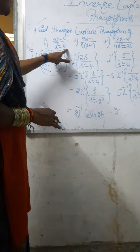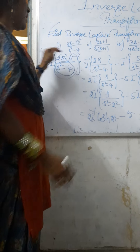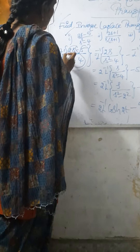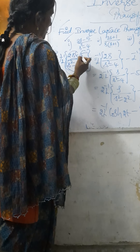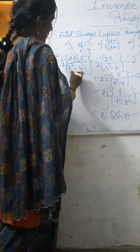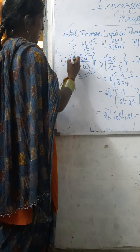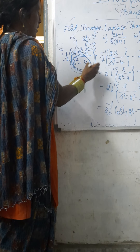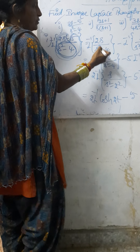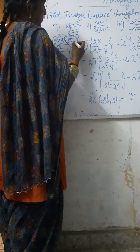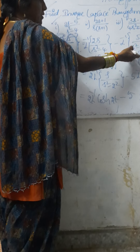Find the inverse Laplace Transform of (2s minus 5) by (s squared minus 4). Solving this problem, we separate it into 2s by (s squared minus 4) and 5 by (s squared minus 4). So we have inverse Laplace Transform of 2s by (s squared minus 4) minus inverse Laplace Transform of 5 by (s squared minus 4).